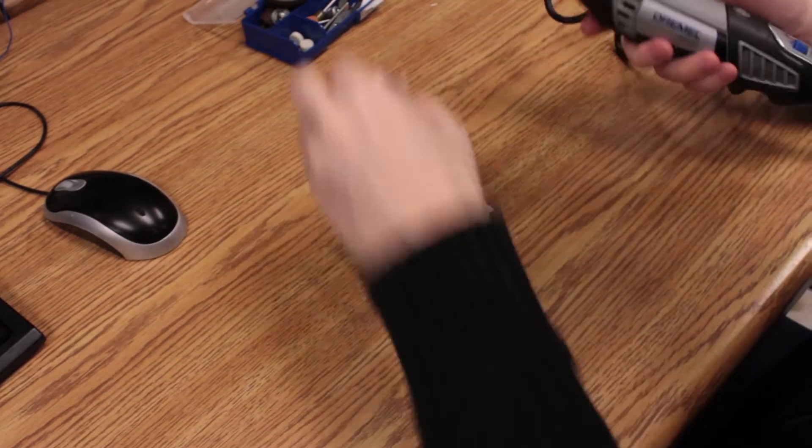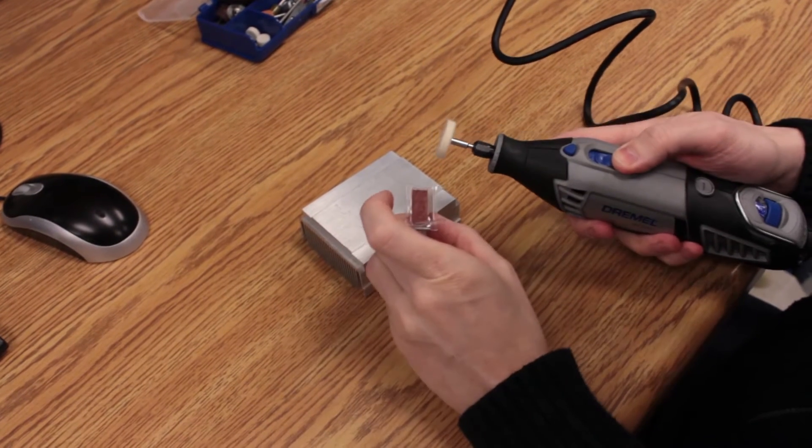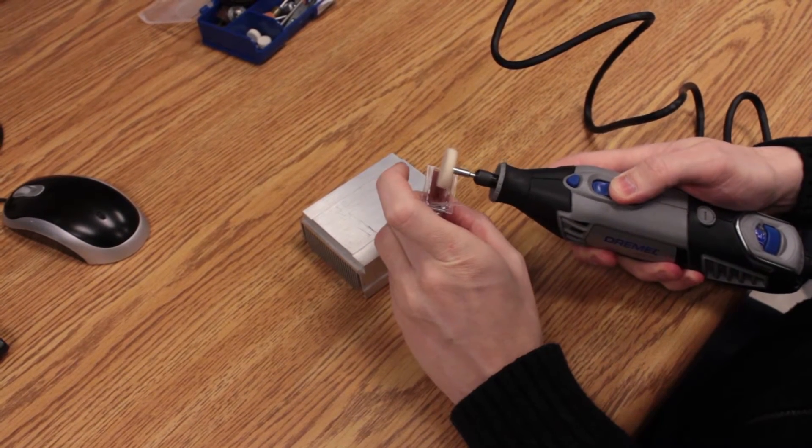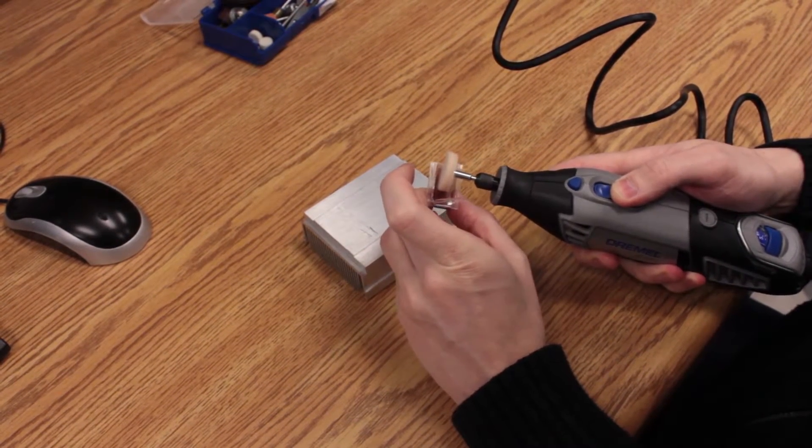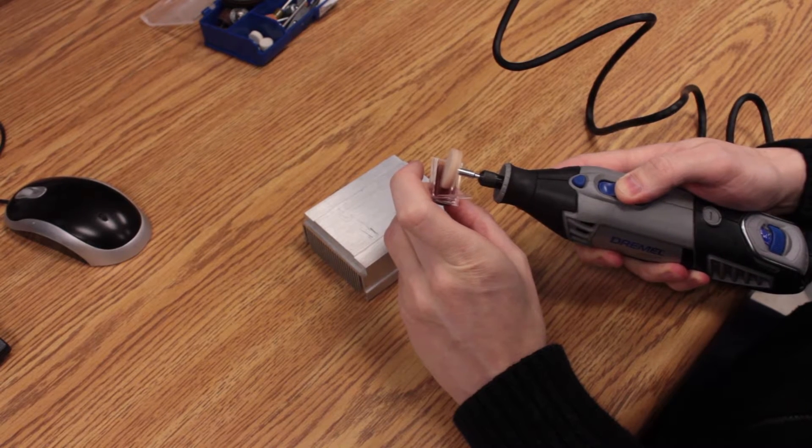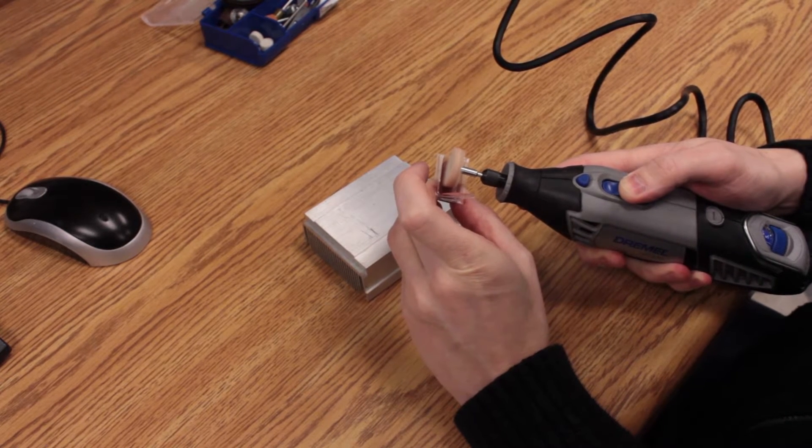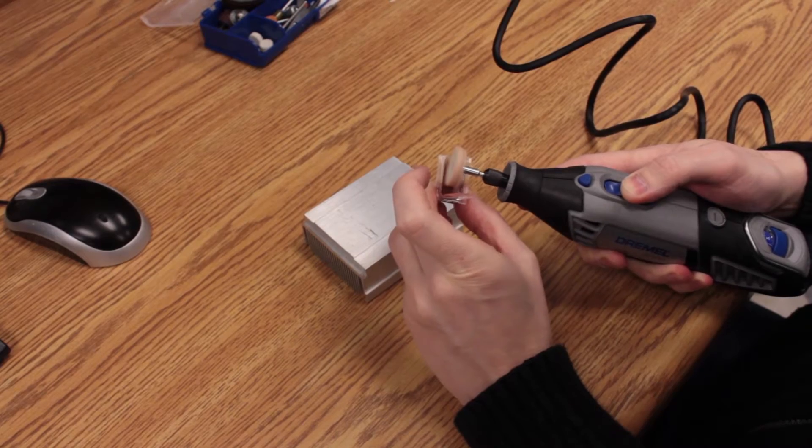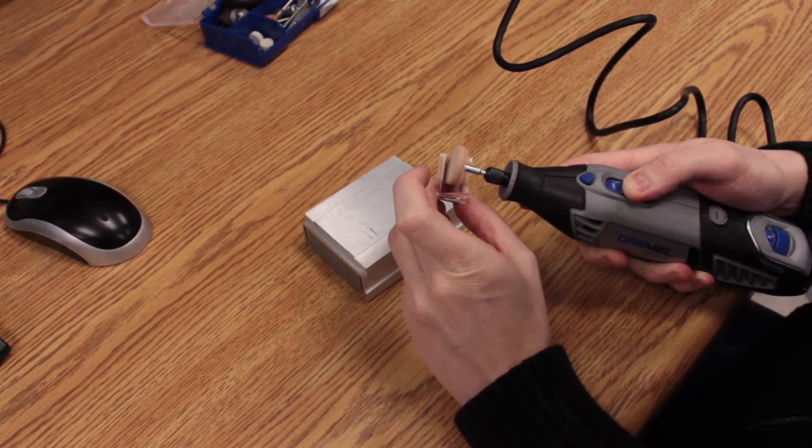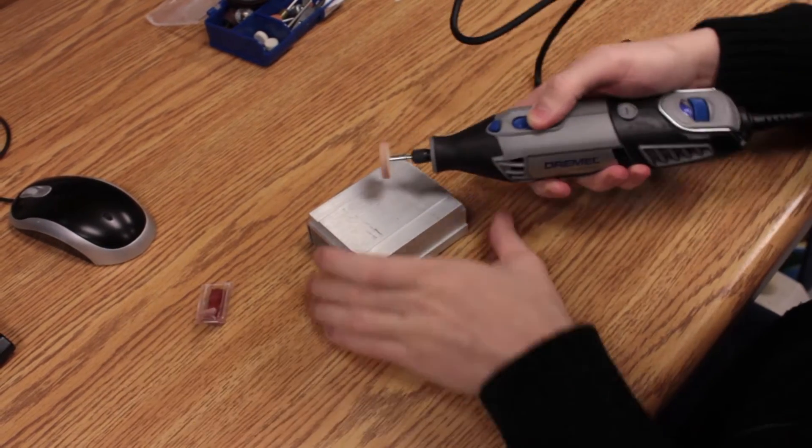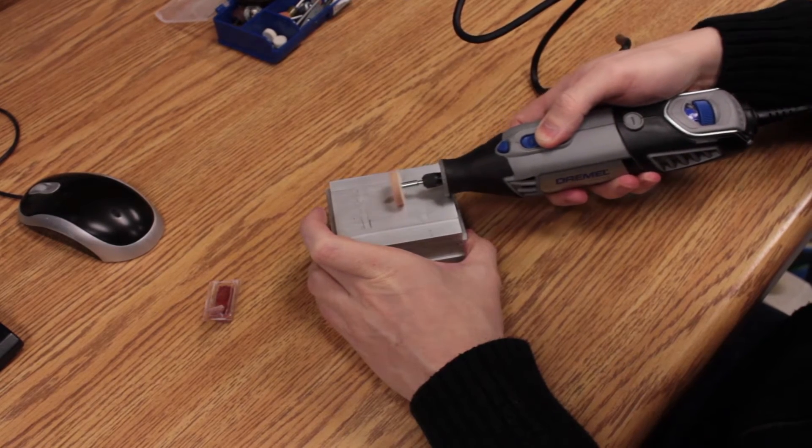So to do that I'm going to take my Dremel here and I have some polishing compounds. I'm just going to turn this on and just get some of it onto the Dremel like this. And I'm just going to go in here and start polishing.